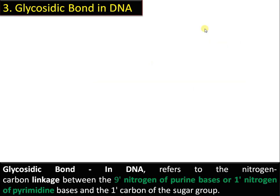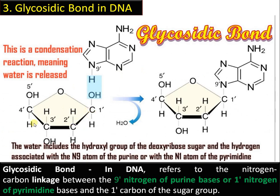The third bond in DNA is the glycosidic bond, which connects the sugar of DNA to its nitrogenous base. In the case of a purine like adenine, it is the C1' position of the sugar bonded to the N9 nitrogen atom of the base. In the case of a pyrimidine, it is the C1' of the sugar bonded to the N1 nitrogen atom. This bond is also formed by a condensation reaction with the removal of a water molecule.